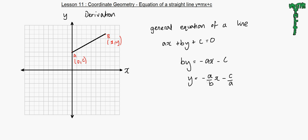So in this case, sorry, minus c over b, because we have divided this side by b. We have divided both sides by b. So now, the gradient in this case is minus a over b, which is the coefficient of x. And the y intercept is minus c over b.